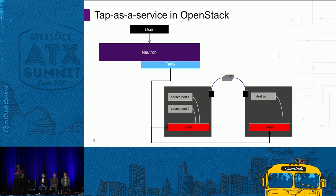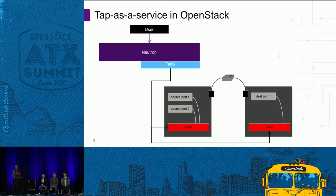Visually, if you're a user of Neutron you interact with the Neutron API, and TAP as a Service is an extension to that API. You have virtual machines or containers provisioned on hypervisors or compute nodes. You define source port one and source port two to be copied over to another VM where you can run TCP dump or other services to see what's going on — ingress, egress, et cetera. A TAP as a Service process running on those nodes will capture this and send it on the same host or across hosts based on your use case.